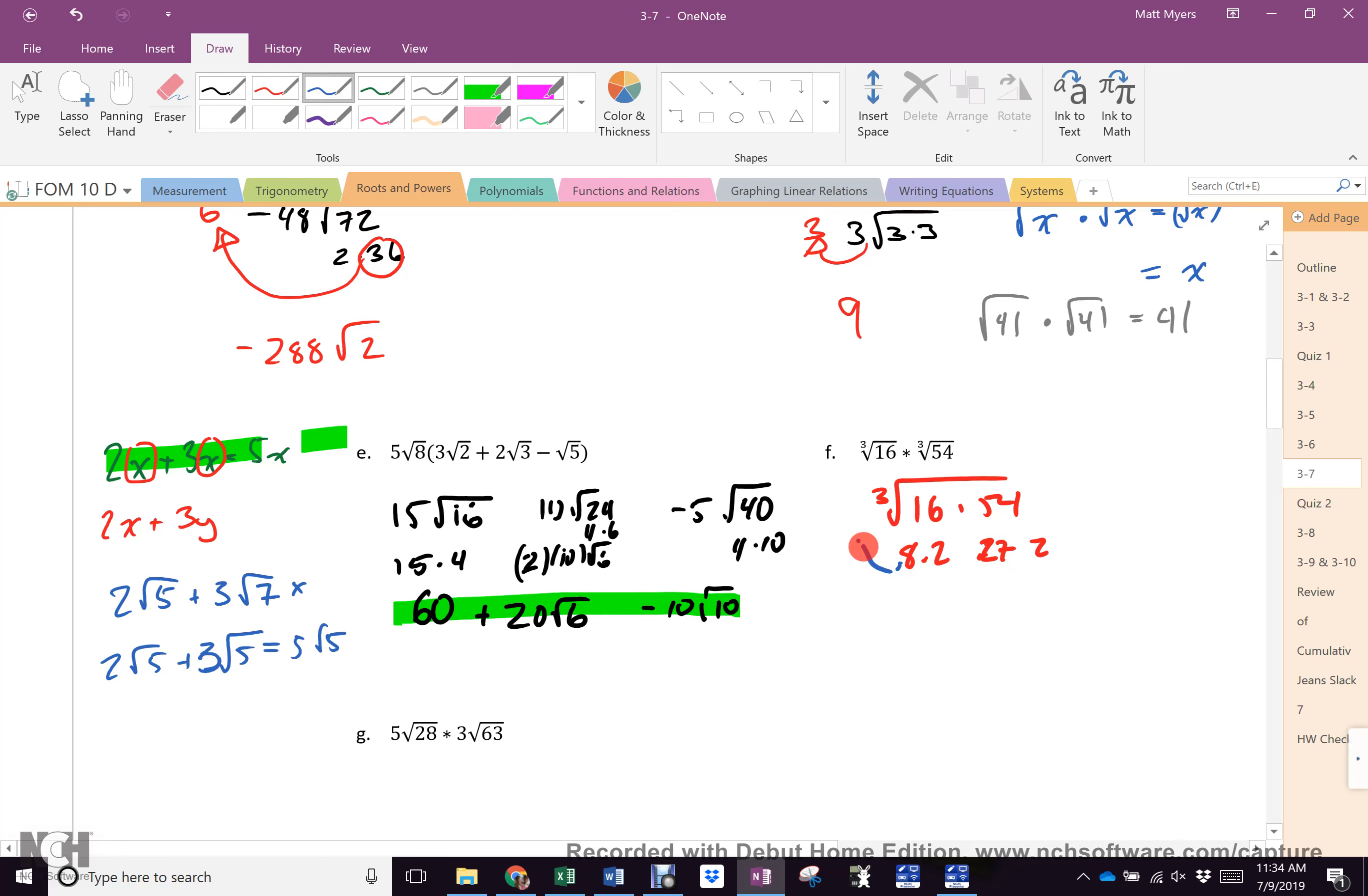So what's coming out from the 8? 2. What's coming out from the 27? 3. What stayed in there? 2 and 2, which is 4. 6 cube root 4. Everybody cool? Great. You do g.